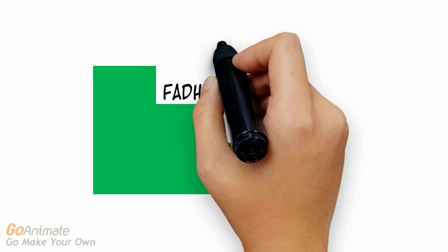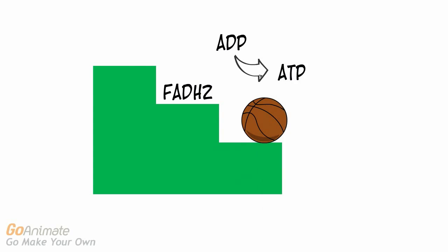FADH2 enters the system at a lower energy state, which allows for the production of two ATPs.